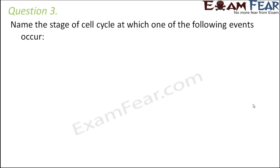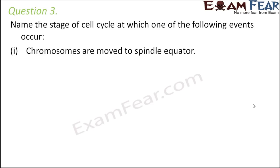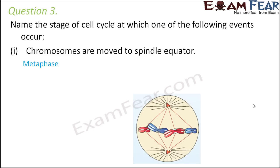Question number 3: Name the stage of the cell cycle at which the following events occur. Chromosomes are moved to the spindle equator — at what stage were chromosomes aligned at the equatorial plate forming the metaphase plate? Of course, it was during metaphase, and that is why it is known as the metaphase plate. This happens in both mitosis and meiosis, so it always occurs in metaphase.